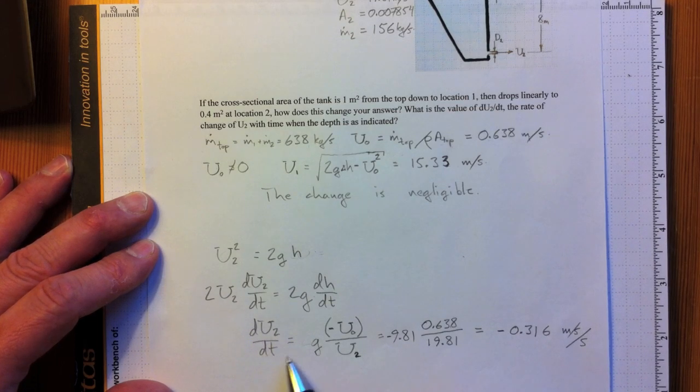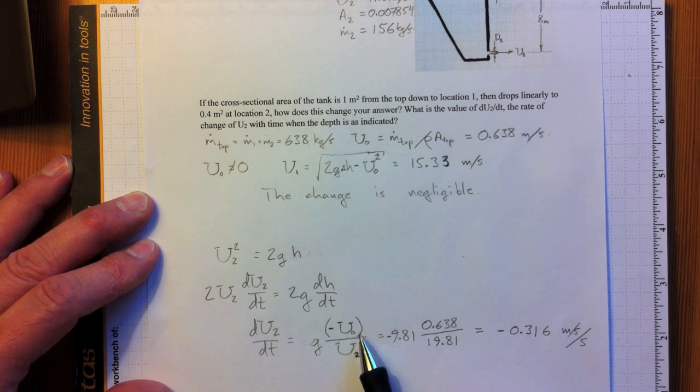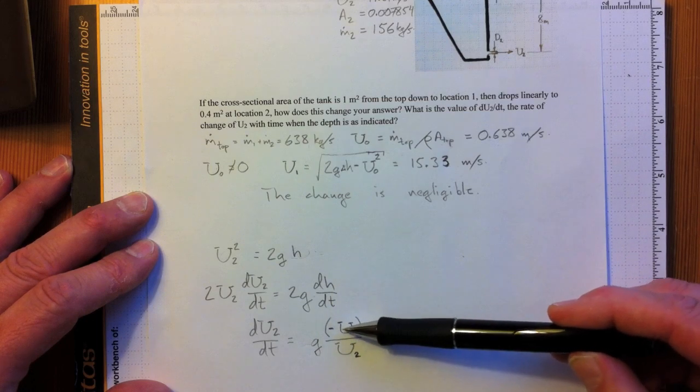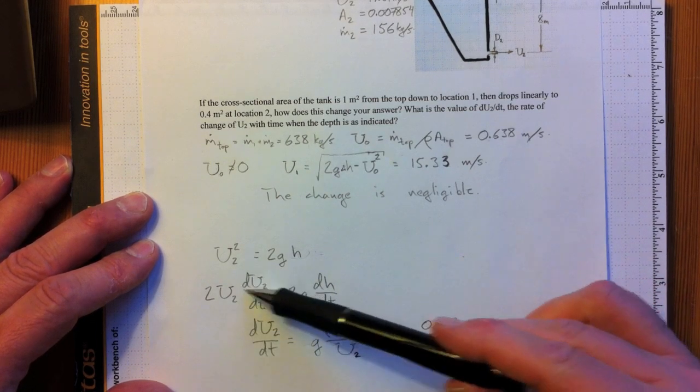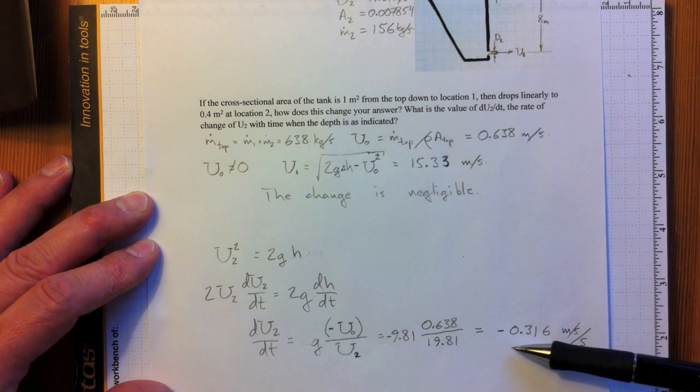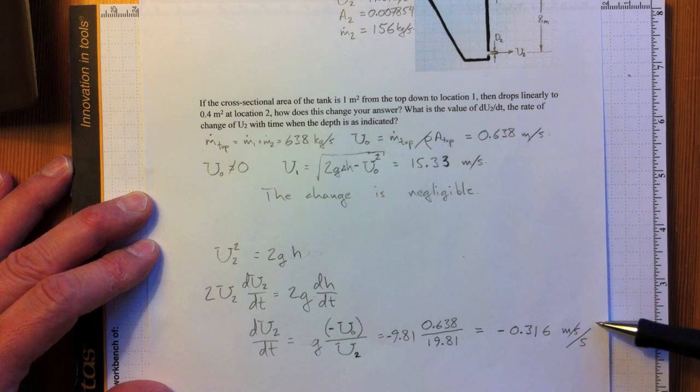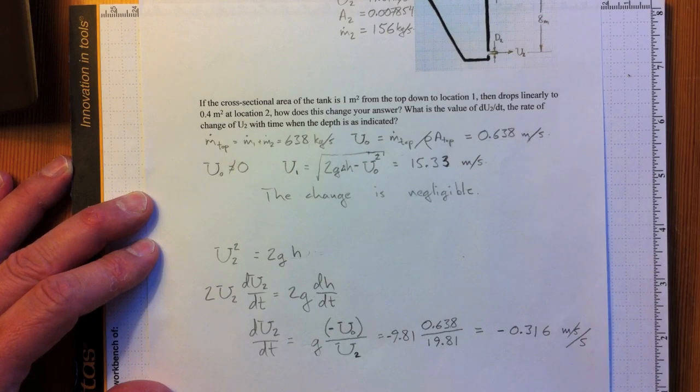we wind up with du2 dt equal to G times negative U0, because that's how the height is changing. dH dt is negative U0 meters per second divided by U2 equal to, plugging in the numbers, negative 0.316 meters per second per second or meters per second squared. Take care.